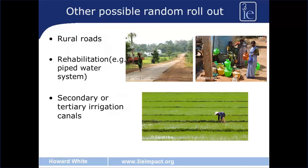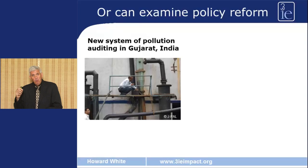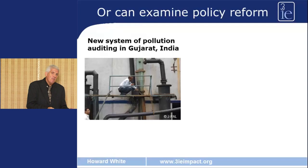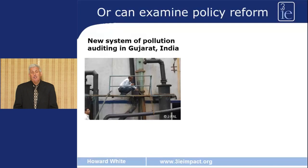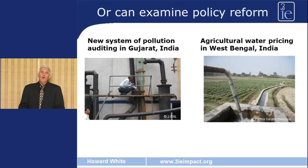We can also use randomised control trials to examine policy reform. Here are two examples of studies funded by 3IE. The first is a new system of pollution auditing in Gujarat in India, where it was shown that the random assignment of independent auditors improved the quality of reporting — the reports were more accurate — and also reduced levels of pollution. We can well imagine applying similar principles to, for example, inspection of construction quality of trunk roads. A second example, also from India, looked at the impact of agricultural water pricing on production and yields for paddy crops in West Bengal, and resulted in a reform of those policies.